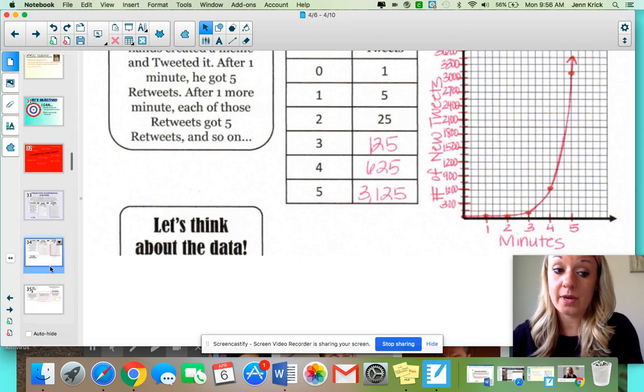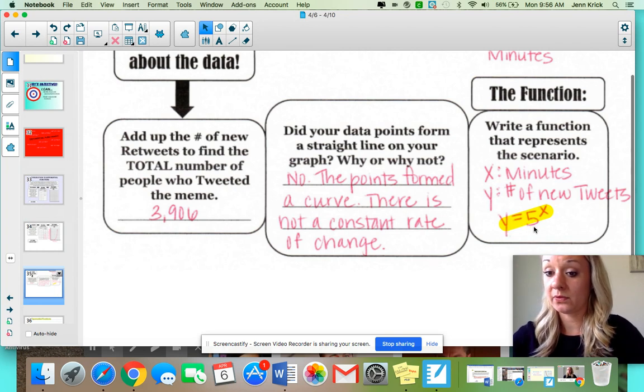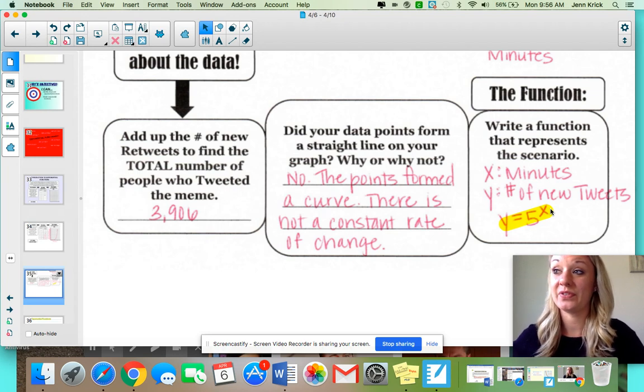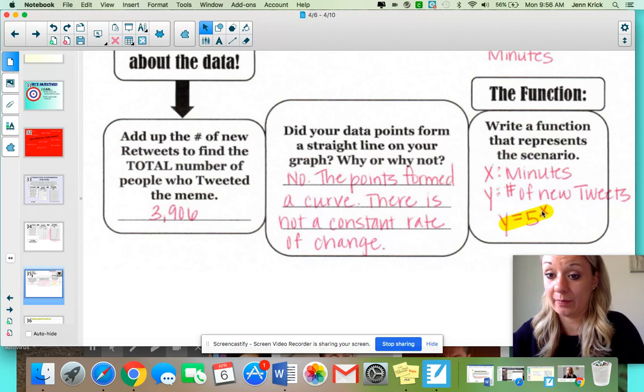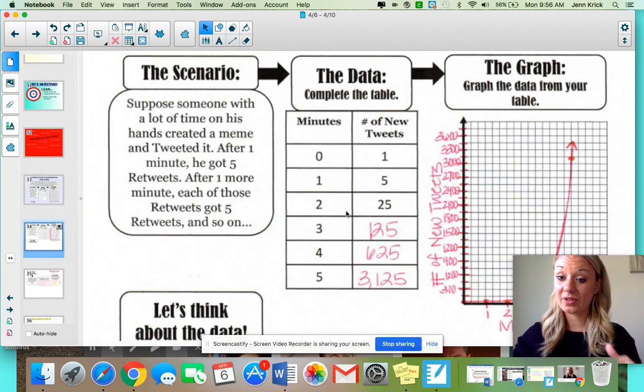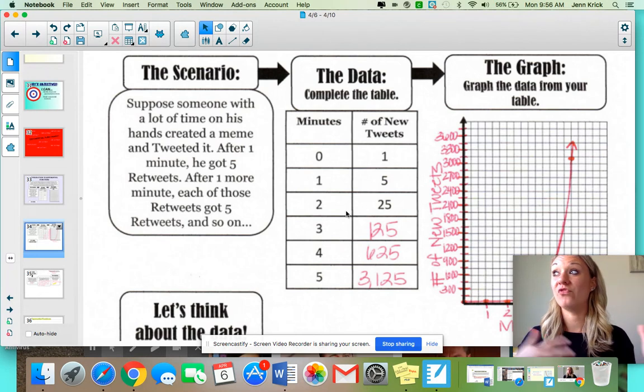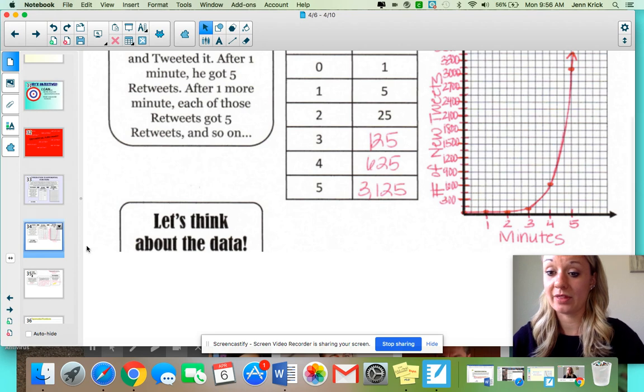Now, if we were using an equation to model this data, here's what it would look like. Y equals five to the x power. Now, remember before we left school, we did a few of these together where I'd give you like a data table and you guys had to come up with the equation with an exponent. It was kind of hard, but that was really looking at exponential data where x represents the number of minutes. Y is the number of tweets. So when we're thinking exponential, you are thinking of data that's increasing or decreasing by a very large amount very quickly and a line that's going to be curved rather than a straight line.